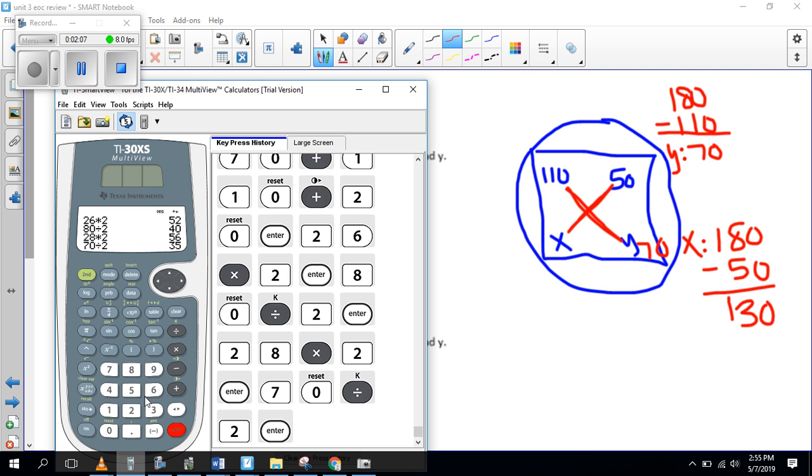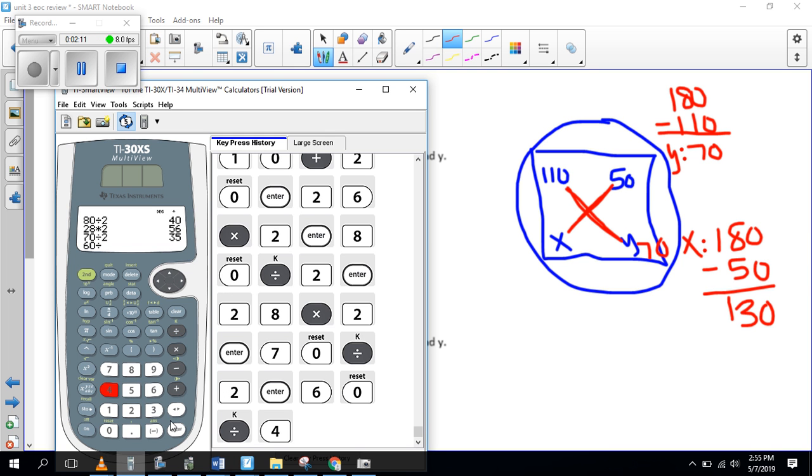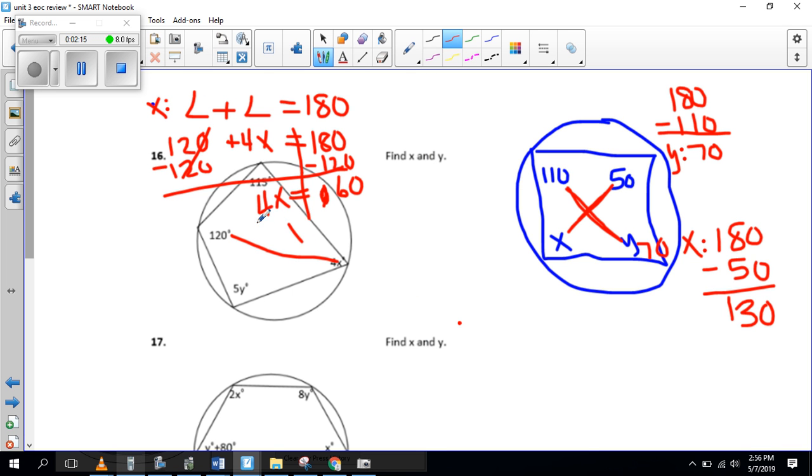And we get 4x equals 60. And then all we do is 60 divided by 4. My brain is not working to do this in my head right now. We get 15. So we divide by 4 on both sides. x equals 15. Okay, so x equals 15. That's what they want us to find. x is 15.